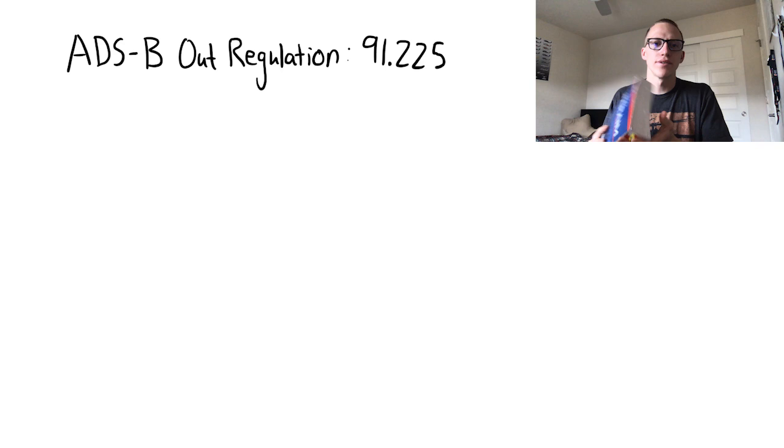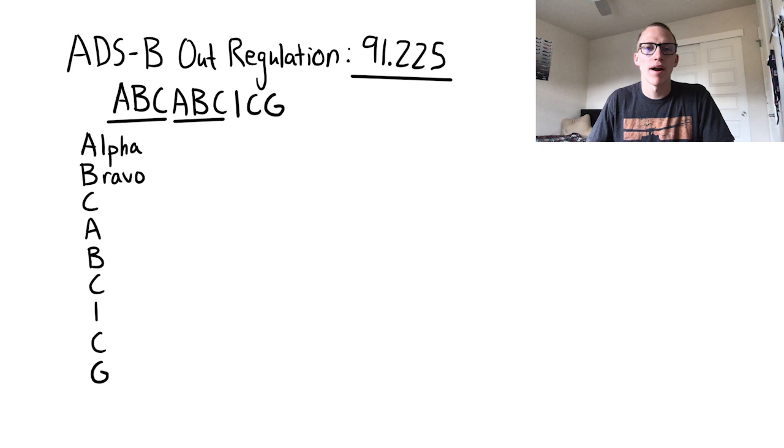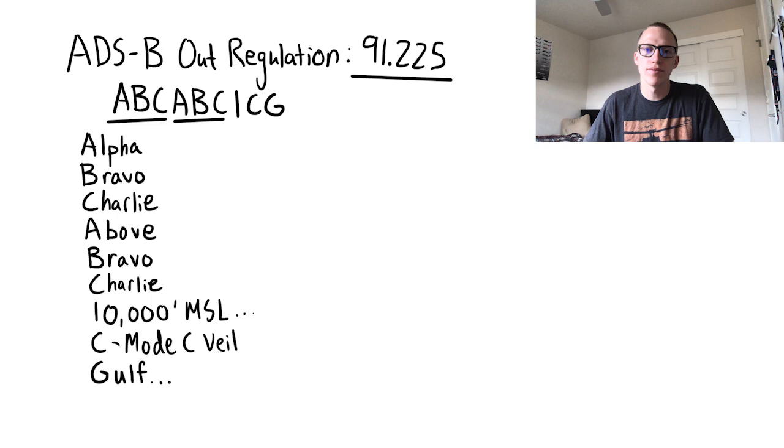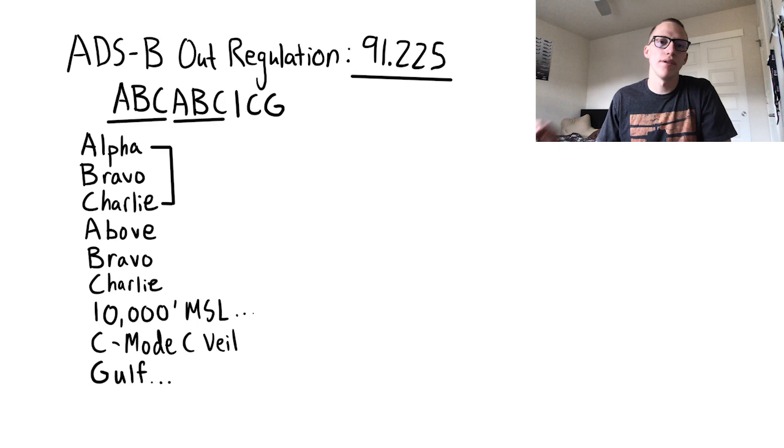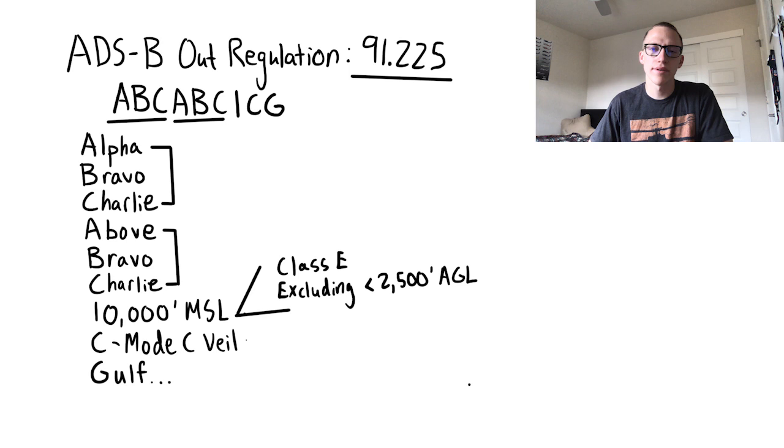And the acronym I use to remember ADS-B out requirements is ABC ABC 1CG, and that expands to Alpha Bravo Charlie, Above Bravo Charlie, 10,000 MSL, Mode C, Gulf. ADS-B out is required in Class Alpha, Bravo, and Charlie airspaces. It's also required above Class Bravo and Charlie airspace. It's required in Class Echo airspace above 10,000 MSL, excluding below 2,500 AGL. It's required within Mode C veils, which have a 30 nautical mile radius of primary Class Bravo airports.